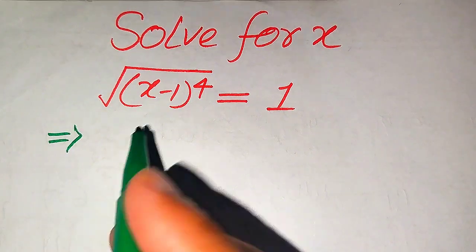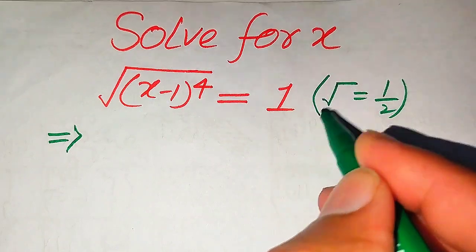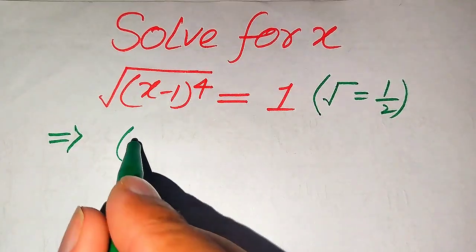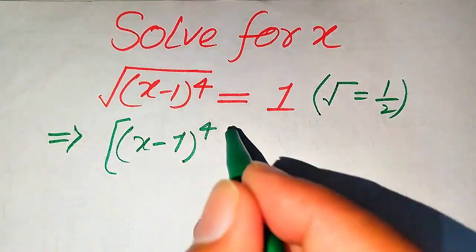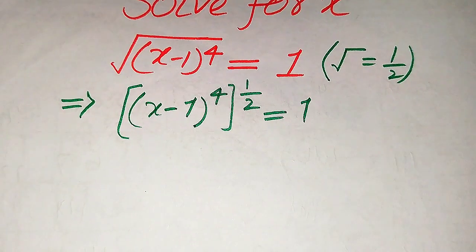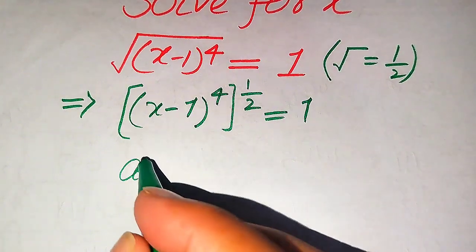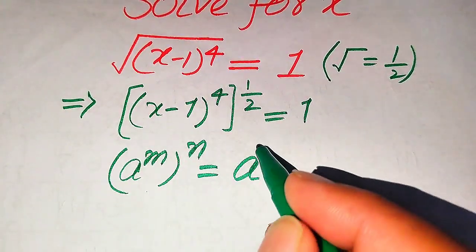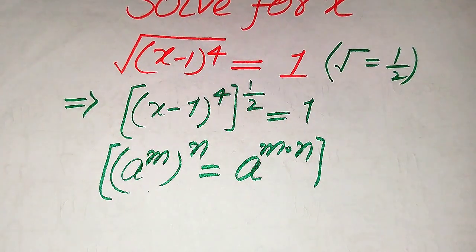First we write our radical expression into exponential form. We know that the radical sign is equivalent to 1 divided by 2, so we replace the radical sign by 1 over 2. After replacing, it is written as (x minus 1) to the power of 4, whole power 1 over 2, equals 1. We then use the exponential law: a to the power of m to the power of n equals a to the power of m times n.